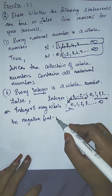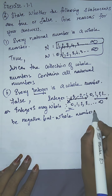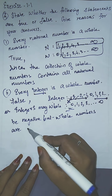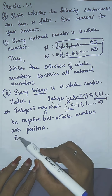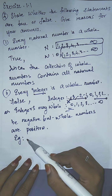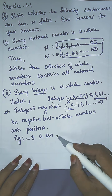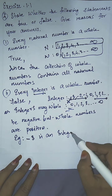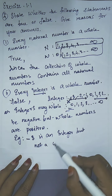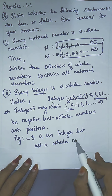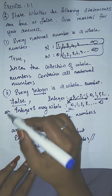But whole numbers are only positive. For example, minus 3 is an integer but not a whole number. Whole numbers are all positive numbers.